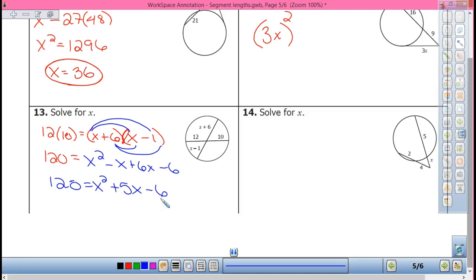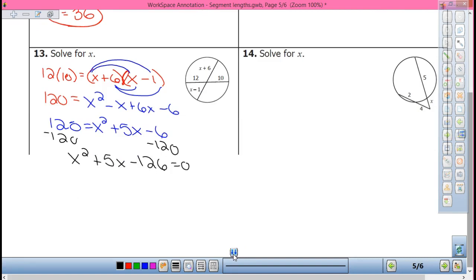Now we have to get everything on the same side. So what do I need to move? I need to move this 120. So I subtract 120, and I have x squared plus 5x minus 126 equals 0. You have two choices from right here. All of the problems that you're going to do are factorable, or you can use the quadratic formula. You have two choices.